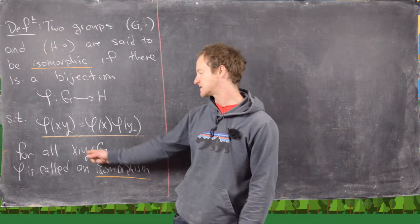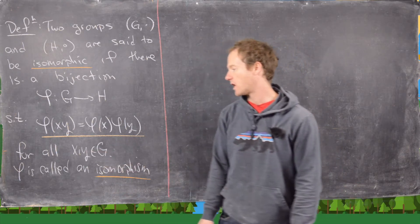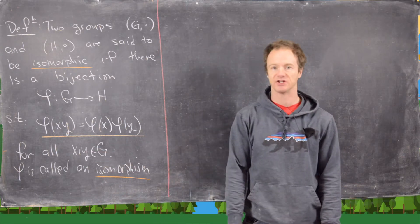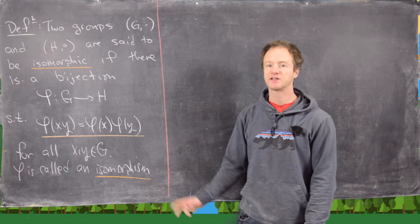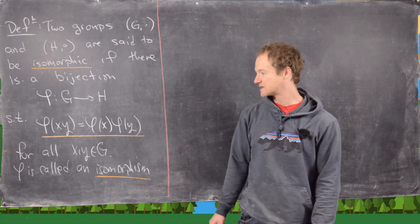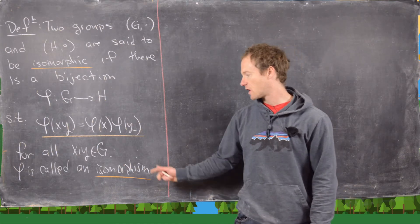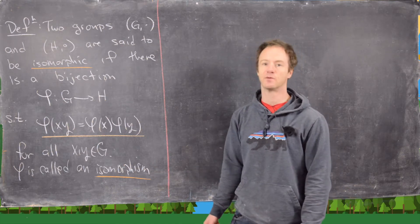This has to be true for all x, y in G, and in that case phi is called an isomorphism.